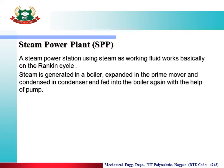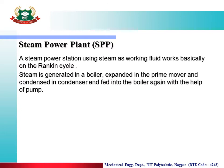Steam is generated in a boiler, expanded in a prime mover (turbine), and condensed in a condenser, then fed back into the boiler again with the help of a pump. Steam is generated in the boiler, fed to the turbine, and power is generated from there.